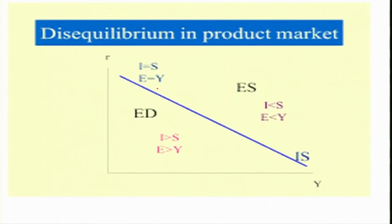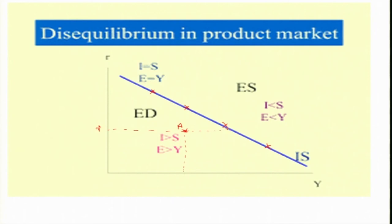Along the IS curve, each and every point is an equilibrium position where investment equals saving. Now look at, for example, point A below the IS curve. At this position the rate of interest is low. When the rate of interest is low, investment will increase — there is an increase in investment. But at a low rate of interest with high investment, in order for investment to equal saving, we actually need more income.